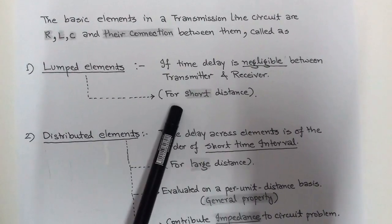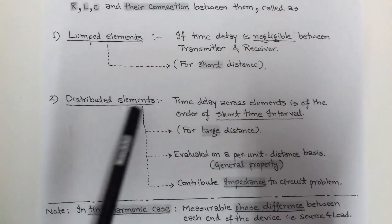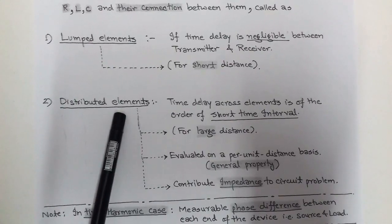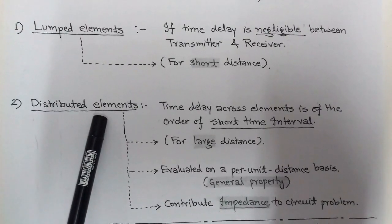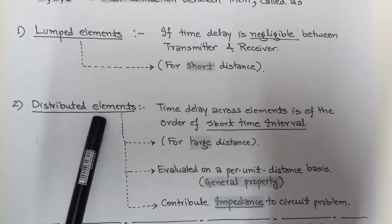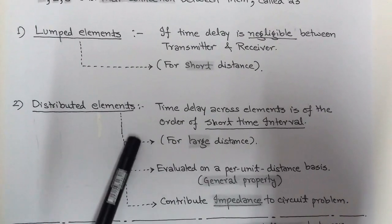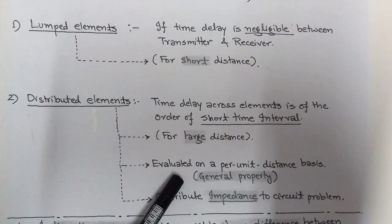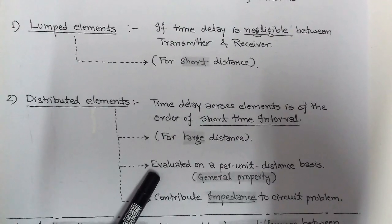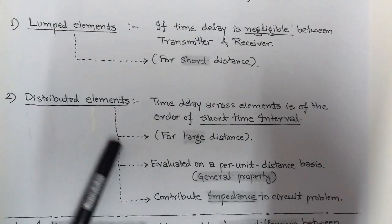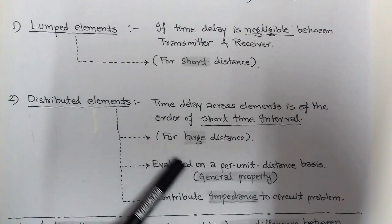When the time delay between transmitter and receiver has some finite value, the transmission line circuit elements are called distributed elements. Distributed elements in transmission lines apply to large distances. This is a general property of a transmission line, and it is evaluated on a per-unit-distance basis — any transmission line can be observed on a per-unit-distance basis.